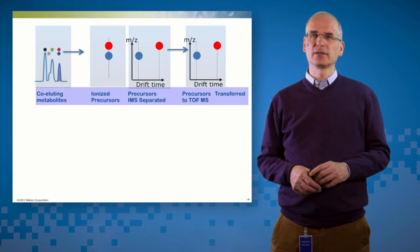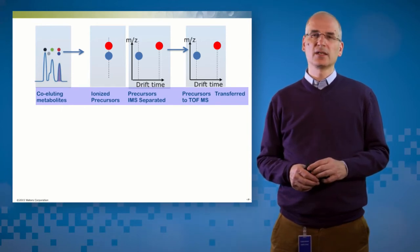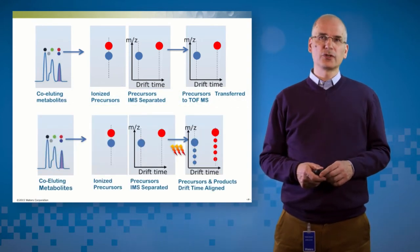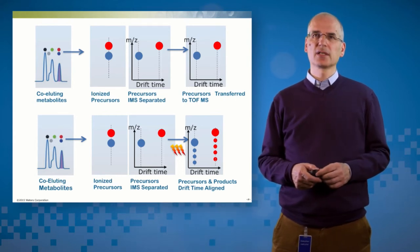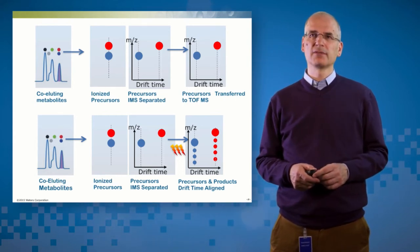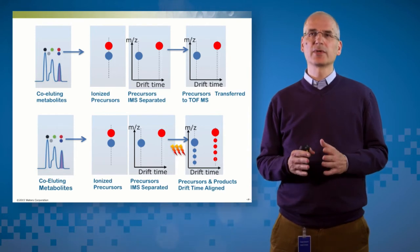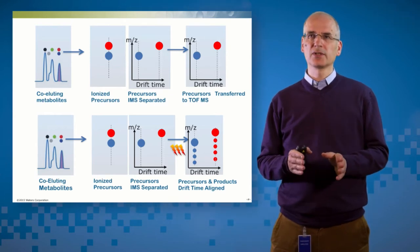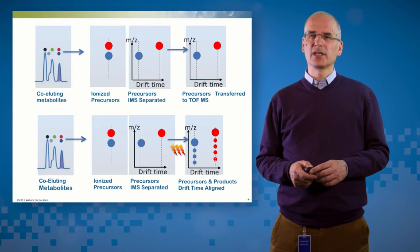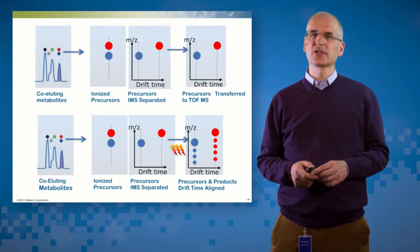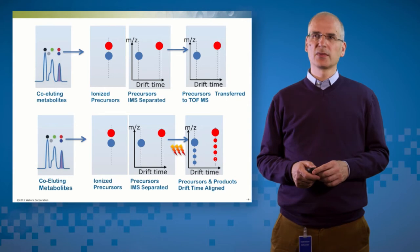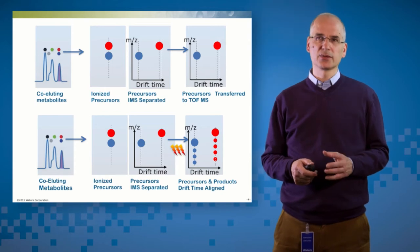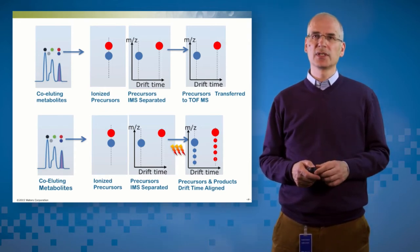In the low energy channel, those co-eluting precursors are separated in drift time and are resolvable in individual spectra. In the high energy trace, the chromatography is obviously the same. The ions come in to the drift time device, they're separated by their drift time. But now we do a non-specific fragmentation post-drift time, post-ion mobility separation. And what that generates is product ion spectra, which are drift time aligned with their precursor molecules. And that allows us to generate individual product ion spectra for each of those metabolites or co-eluting entities, even though they're actually co-eluting in retention time.